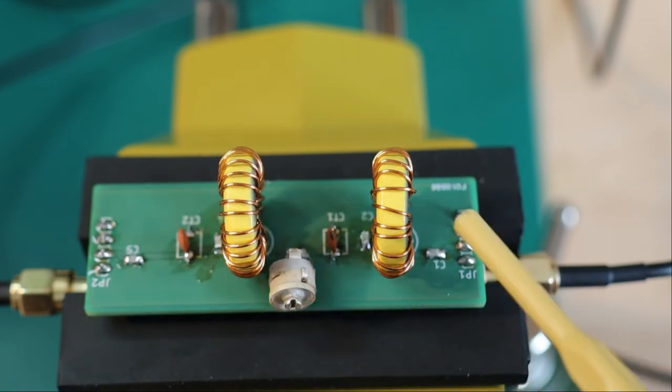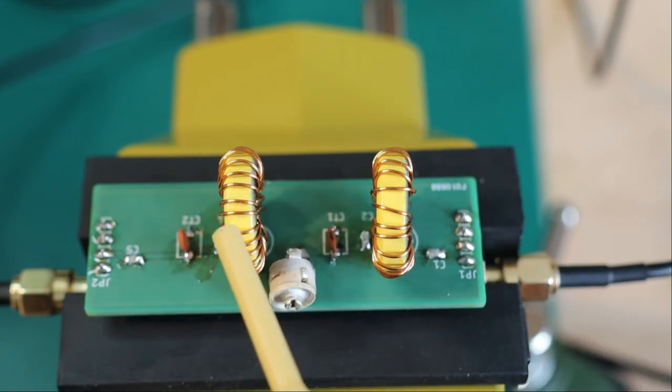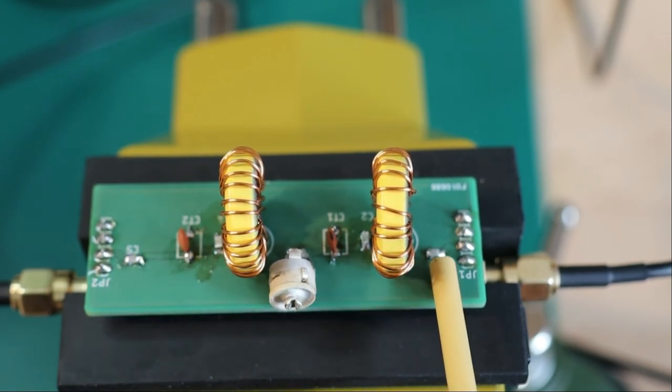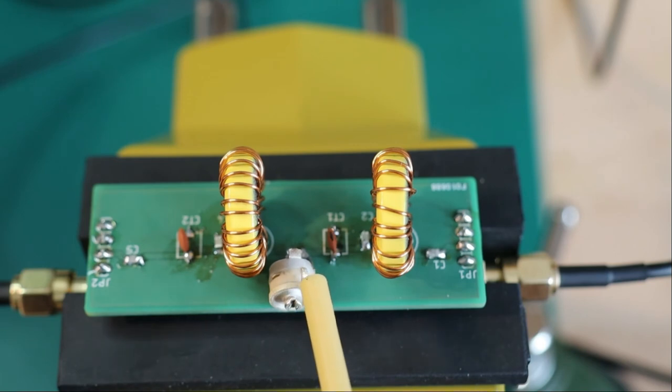This is the bandpass filter built up on a small PC board. You see the first tank, the second tank. Each tank consists of a toroid and its parallel capacitors, an SMT capacitor and a wired capacitor for tuning. The input and output caps, and the trim cap between the two tanks to trim and tune the coupling of the two tanks. Let's take a look at the spectrum analyzer and see how it performs.